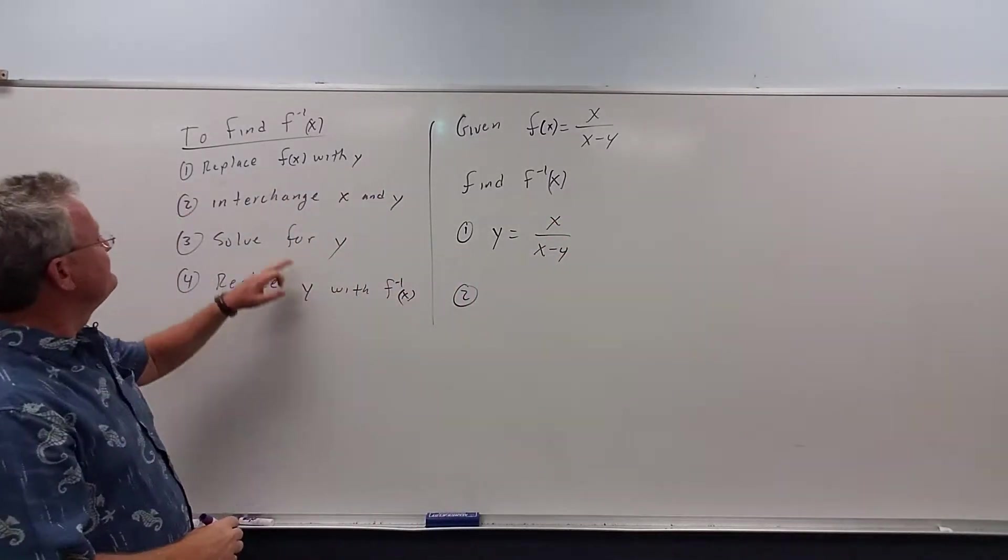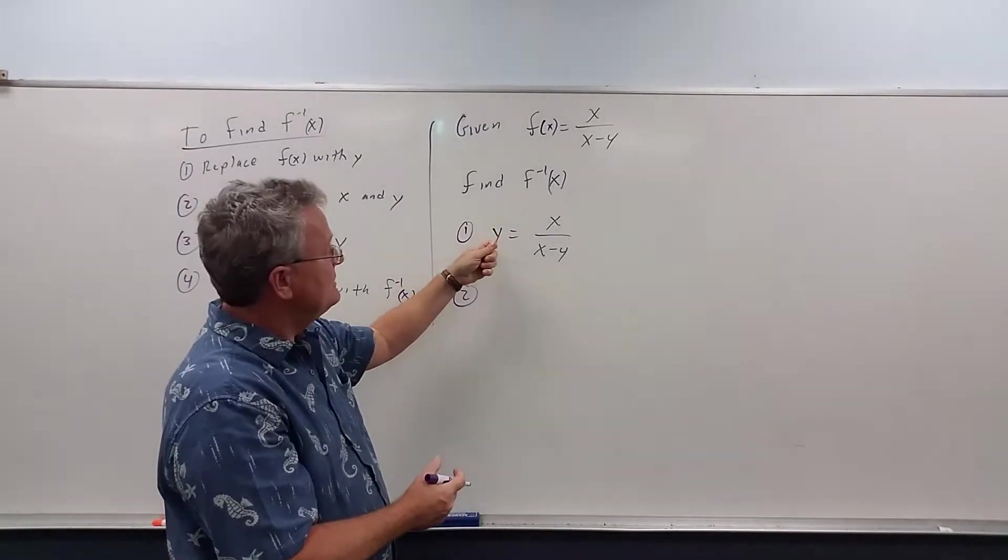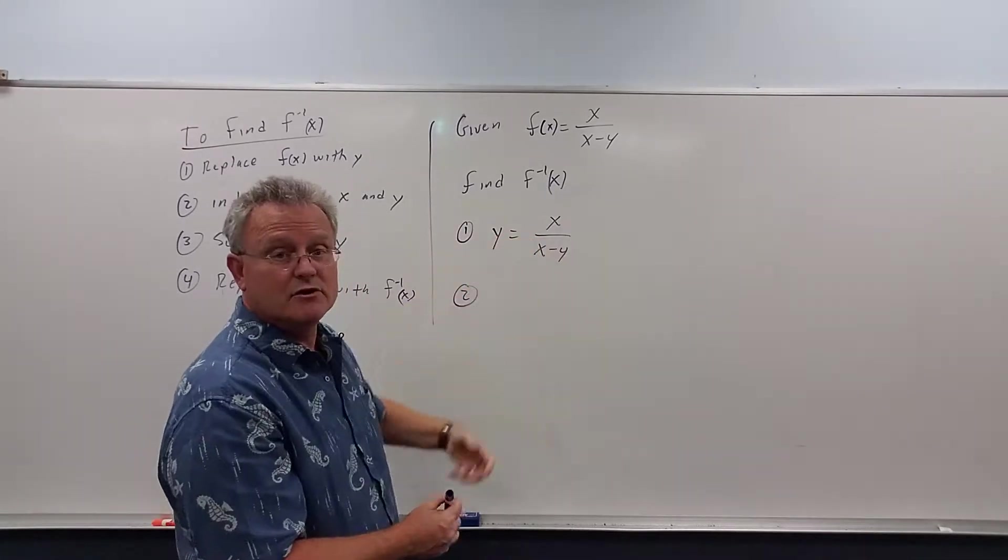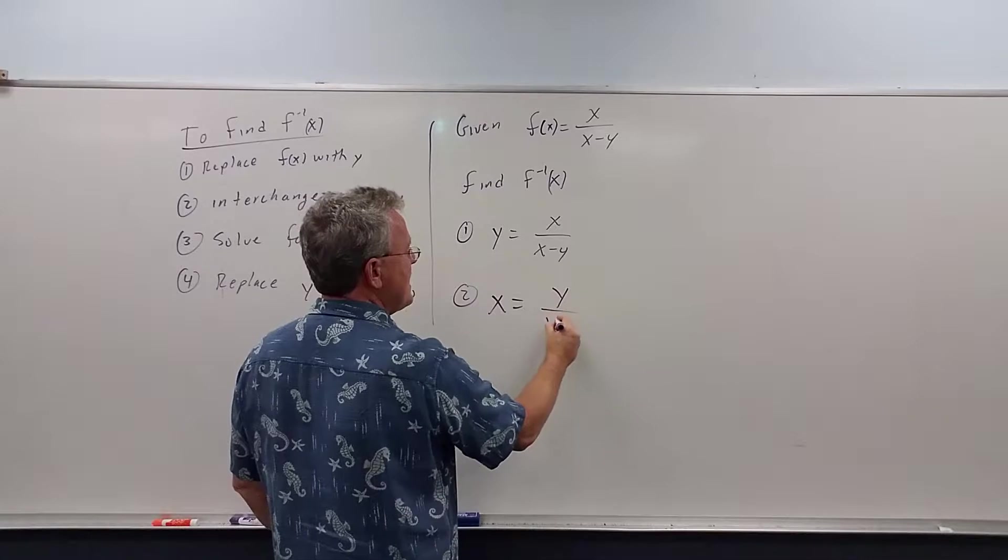Step 2: Interchange x and y. In other words, wherever there's a y, make it an x, and wherever there's an x, make it a y. So make that y an x, and make these x's y's.